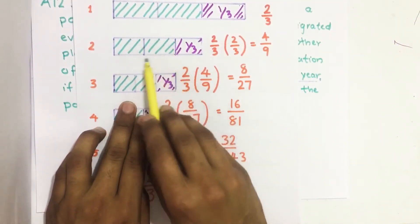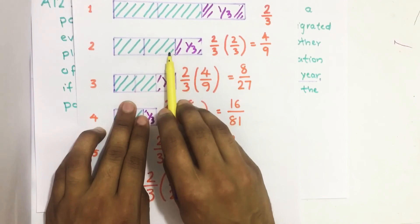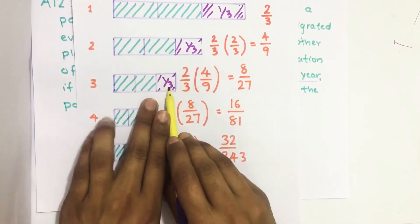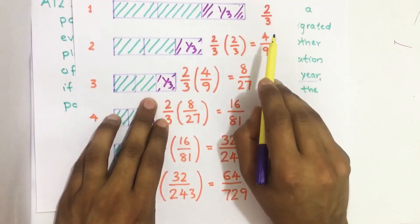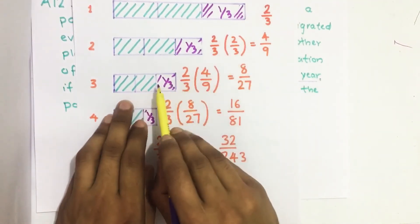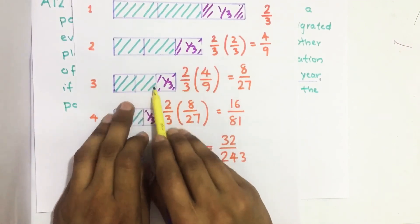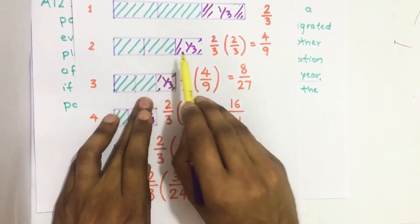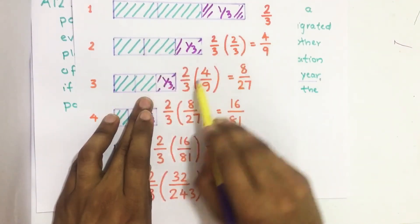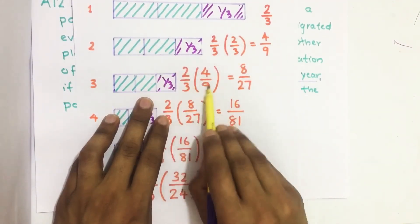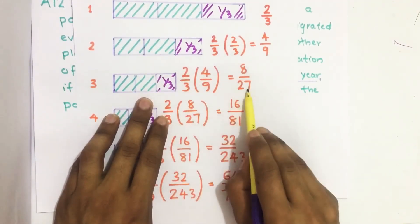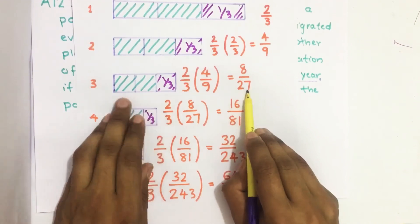In the third year, this is the remaining population after the second year. From this remaining population, one third leaves, so two thirds of this remaining population gives us eight by twenty-seven at the end of the third year.